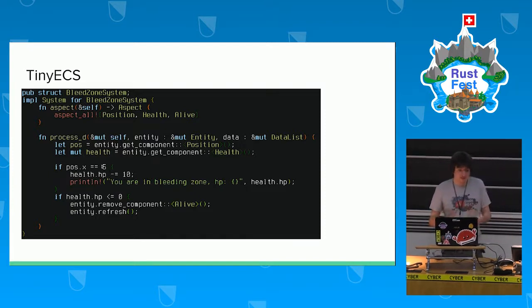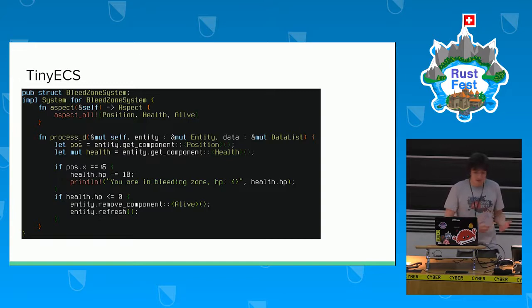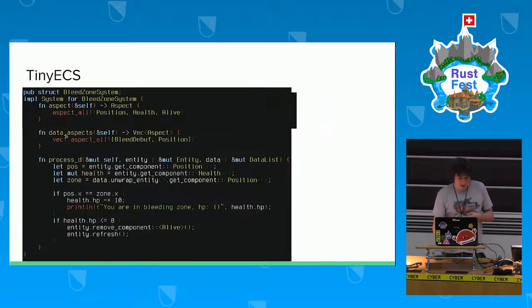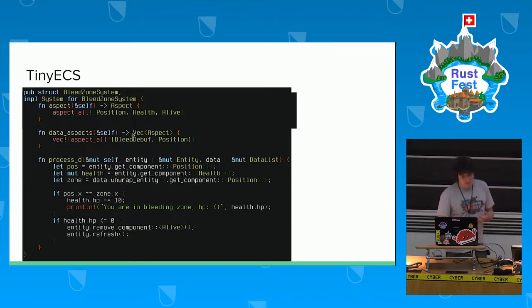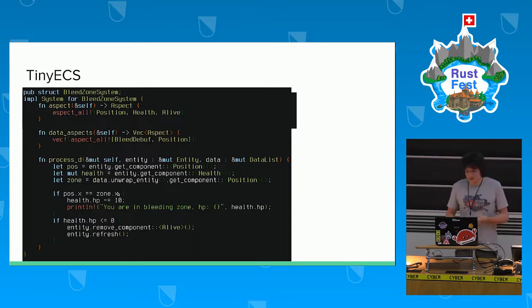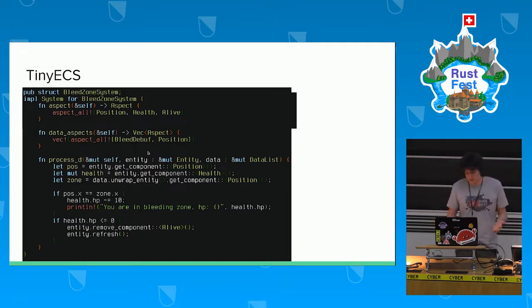But now we have a problem — the area constant is hard-coded. When we want to make that zone move or behave dynamically, we need to make it an entity. So I made something like data aspects, and now that system processes each frame entities with that component, but the system can also read from any entities with bleed debuff and position. So now instead of a hard-coded value, it reads bleed zone dot X. We can have another system moving the bleed debuff, making it more controllable.